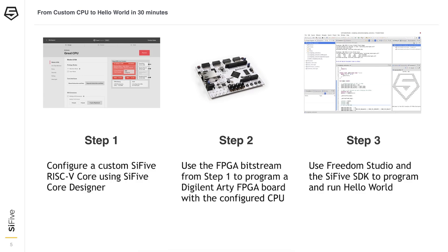So how do we go from a custom CPU to Hello World in 30 minutes? It's a three-step process. First, you configure your core using SiFive Core Designer. Step two is to program the FPGA — actually the most complicated part. And then step three is writing your application using Freedom Studio or Freedom SDK, which are our software development tools.